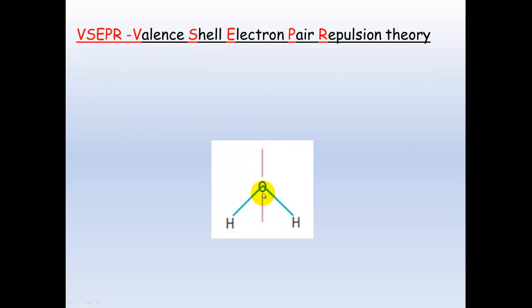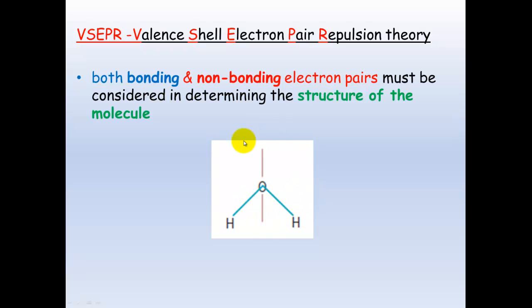If we have a look at water here, you'll see that water has two lone pairs of electrons and two bonding pairs of electrons. When we're looking at the structure of a molecule, it's important to look at both the bonding and non-bonding pairs of electrons.